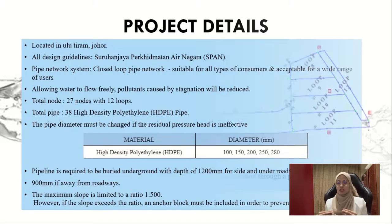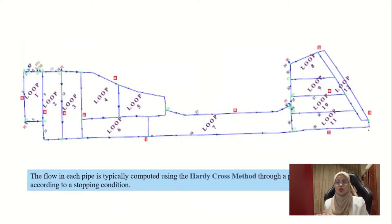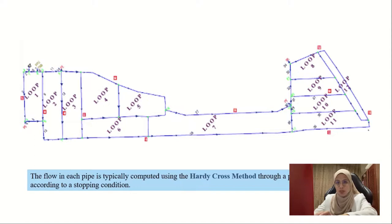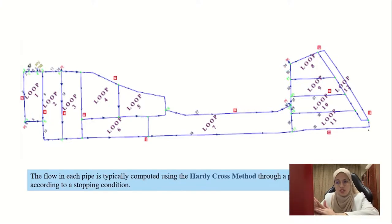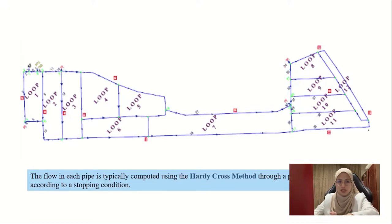This is the picture that we drew on AutoCAD. As mentioned, there are 12 loops and the red colour represents the fire hydrants. The flow in each pipe is typically computed using the Hardy-Cross method through a process of trial and error according to a stopping condition.